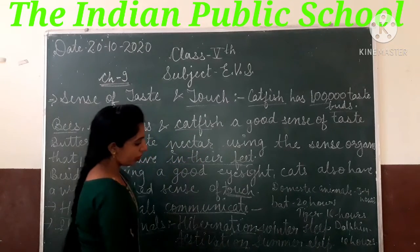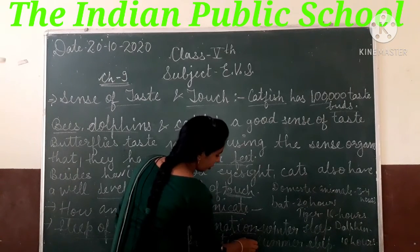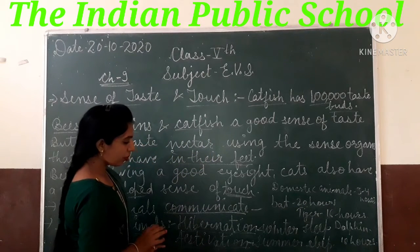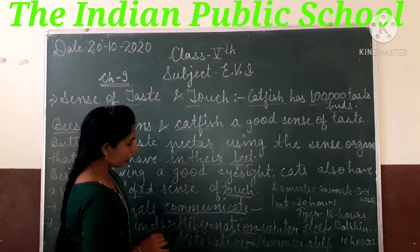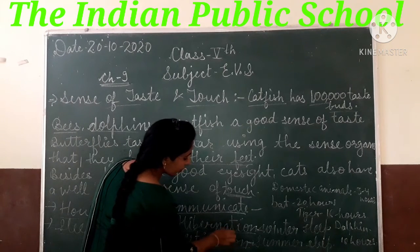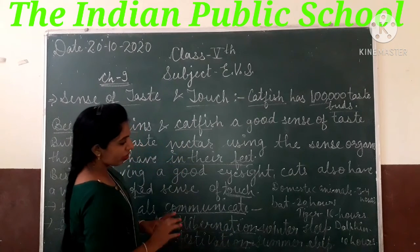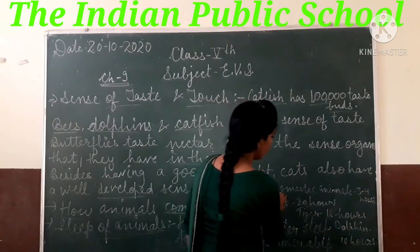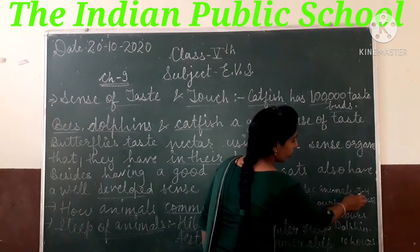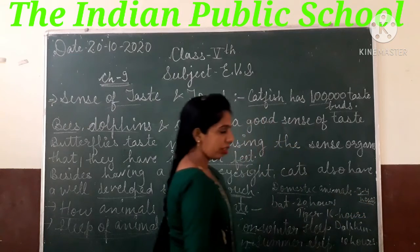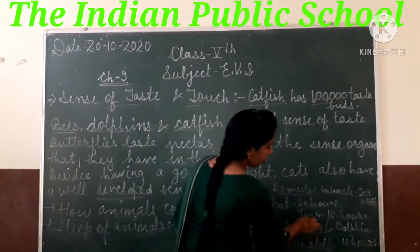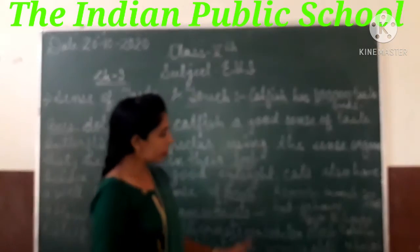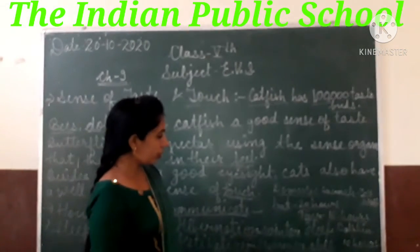Estivation में animals summer में सोते हैं, यानि की 6 महीने के लिए वो अपनी sleeping में चले जाते हैं और winter में नहीं सोते। Domestic animals 3 या 4 hours के लिए नींद लेते हैं, और tiger 16 hours तक सोता है — जो young tiger होता है वो 16 hours तक sleeping करता है।